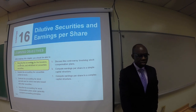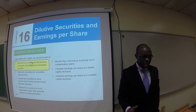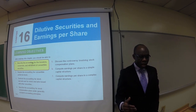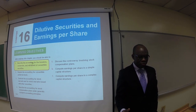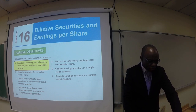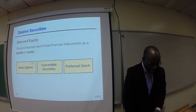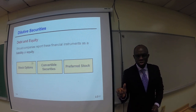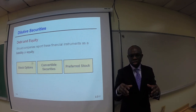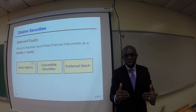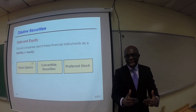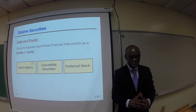We are going to talk about the first objective: to describe the accounting for the issuance, conversion, and retirement of convertible securities. Dilutive securities are those financial securities that have the potential to dilute EPS, or earnings per share.